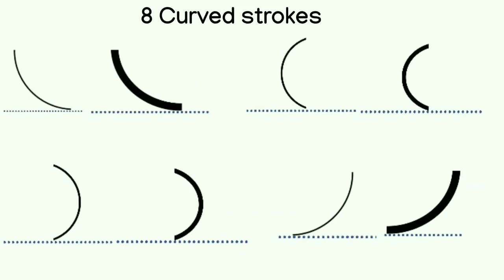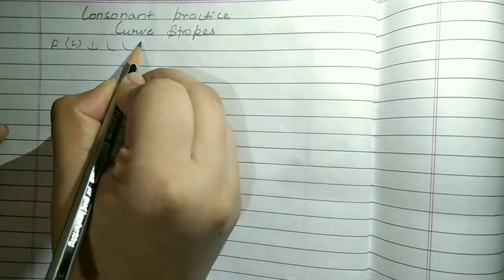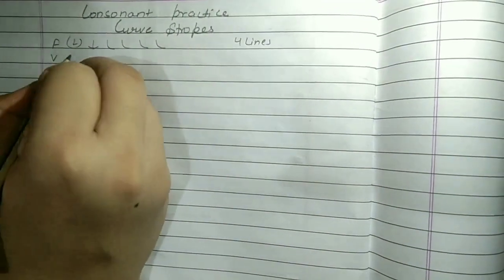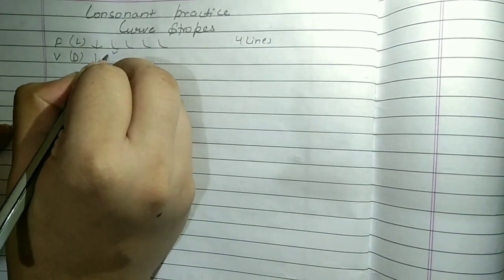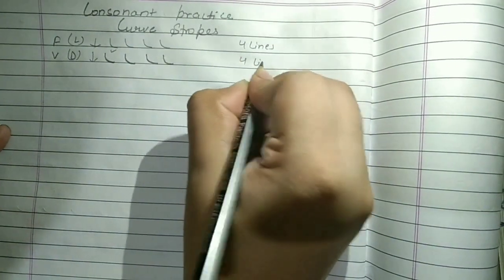These were our eight curved strokes, which we have completed today. Now let's see how to practice the curve strokes. The first consonant is F. F is our light consonant, made in the downward direction. We will practice F four lines. Next consonant is V. V is our dark consonant, made in the downward direction. We will practice V four lines.